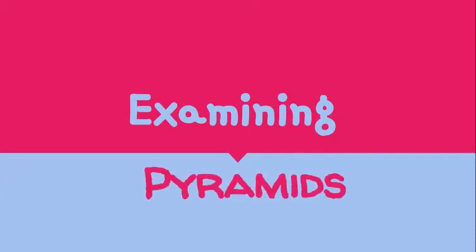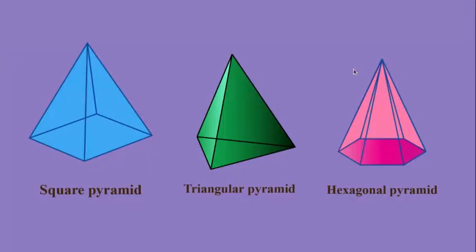Examining pyramids. These are examples of pyramids, and as you can see, they all end with a point at the top right here. This is a square pyramid, a triangular pyramid, and a hexagonal pyramid.